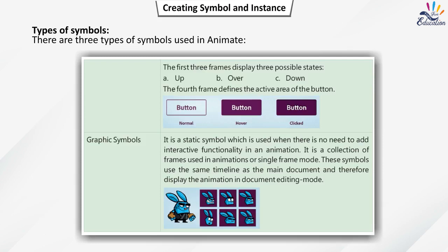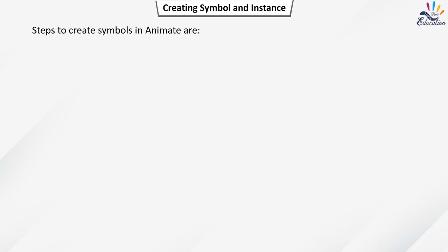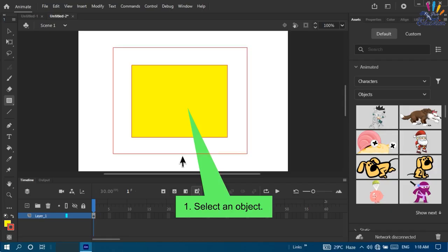The first three frames of a button display three possible states: Up, Over, and Down. The fourth frame defines the activity area of the button. Graphic Symbols: a static symbol used when there is no need for interactive functionality. It is a collection of frames used in animations or single-frame mode, and uses the same timeline as the main document, displaying the animation in document editing mode.